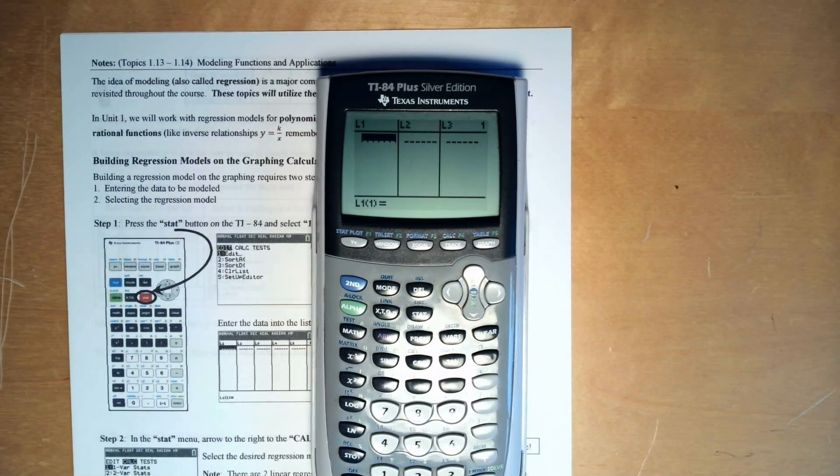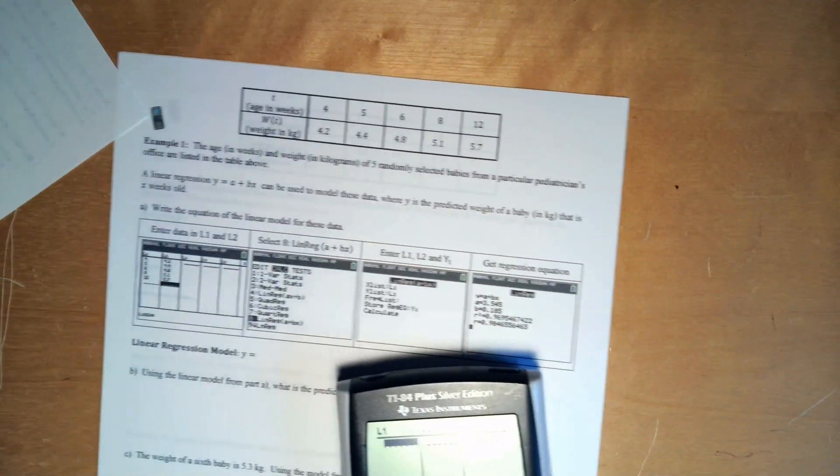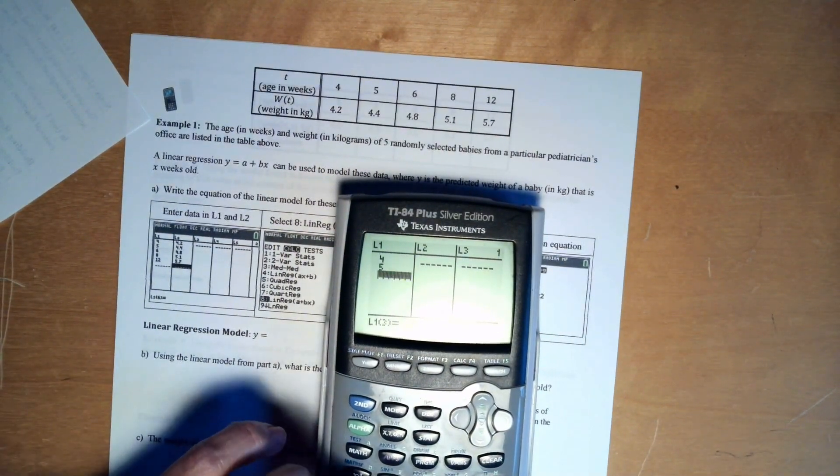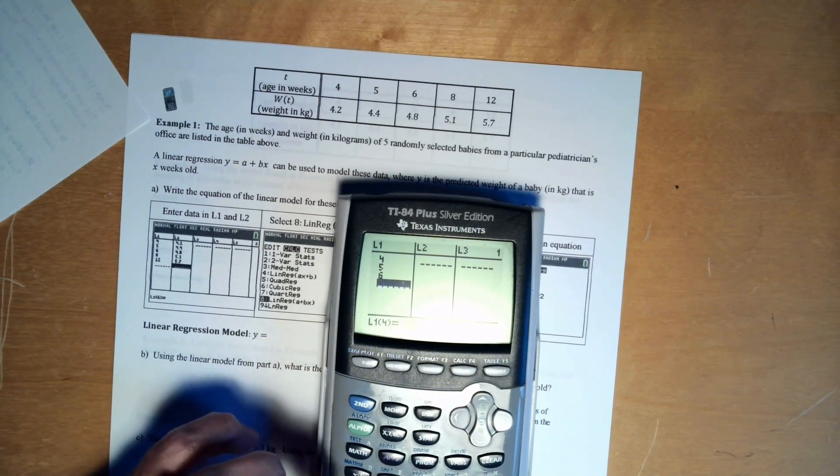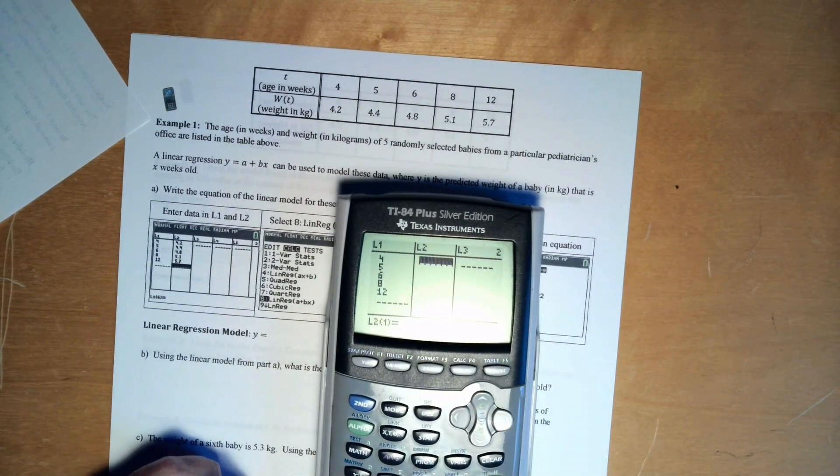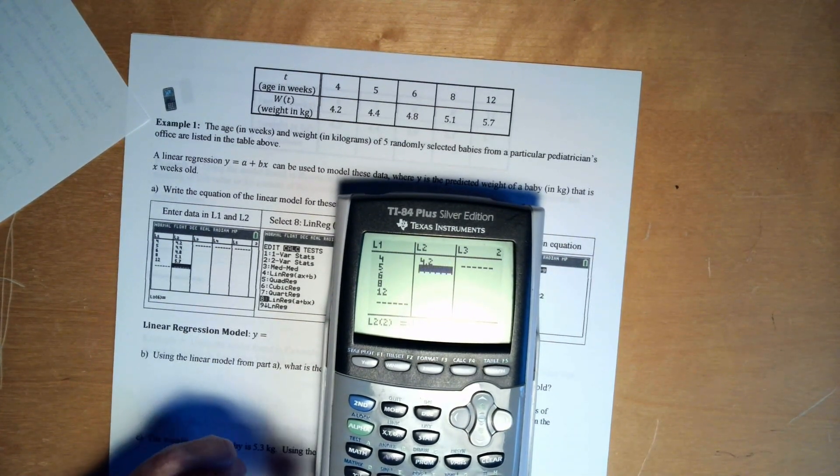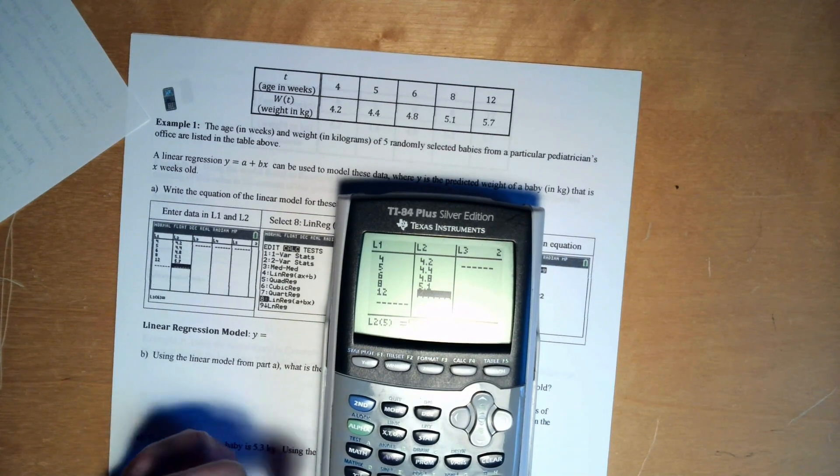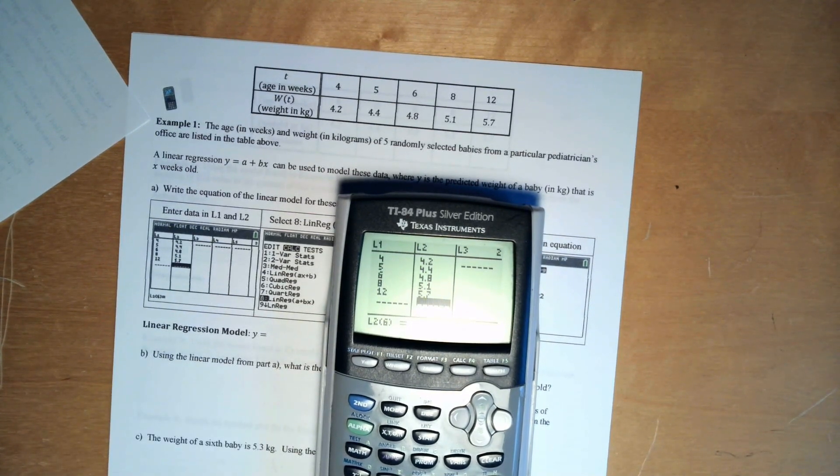So let's just make up some numbers. Actually, let's go ahead and use the numbers on the second page. Let's just go put in 4, 5, 6, 8, and 12. Jump over. We need 4.2, 4, 4.8, 5.1, and 5.7. Okay, alright, so there's our things in our list.